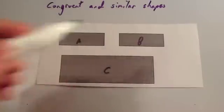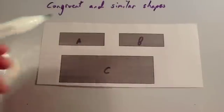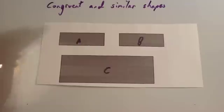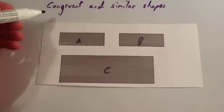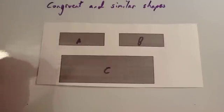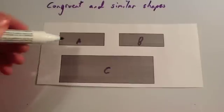We're now going to look at congruent and similar shapes. These two terms you need to be really familiar with and you need to know what they mean. So let's start off with congruent. If two shapes are congruent to each other, that means they're exactly the same shape and size.